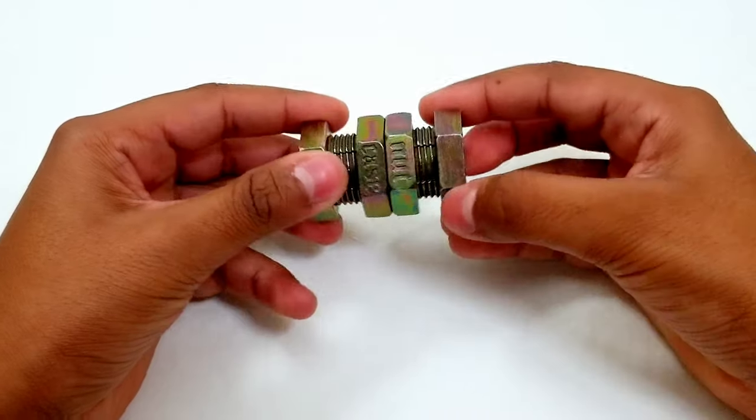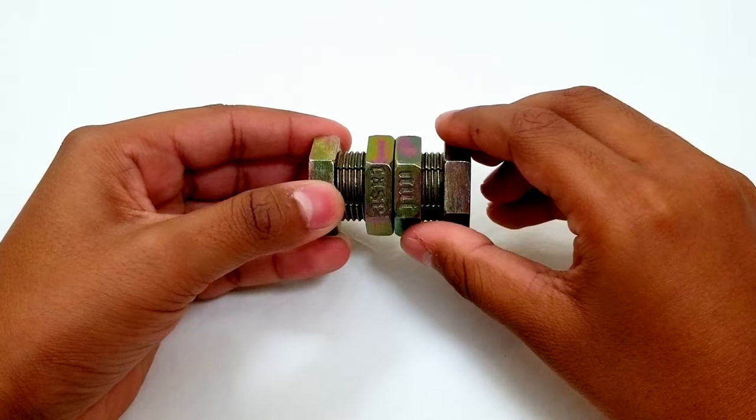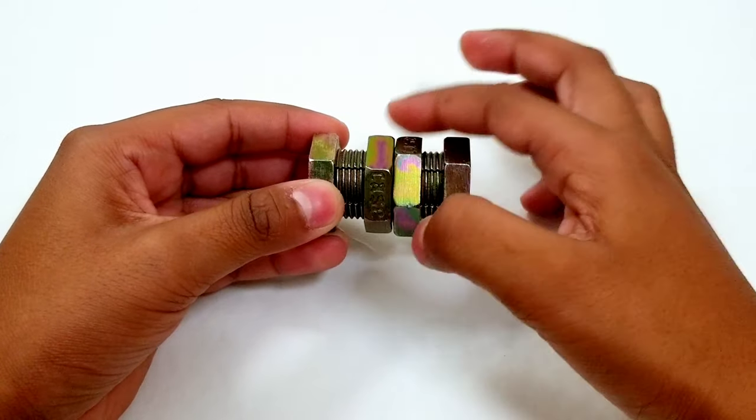First, orient the puzzle like this so that the word nut is on the right and the word case is on the left. Then you have to put both nuts at the very end like this.